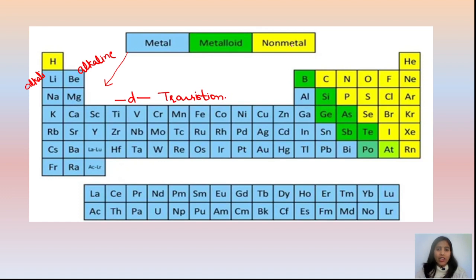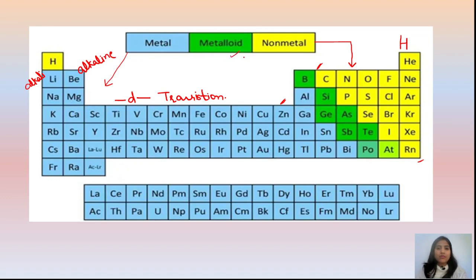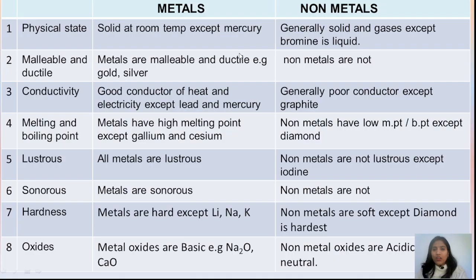If you talk about non-metals, these are shown in yellow. Hydrogen is also a non-metal. The non-metals starting from carbon include: carbon, nitrogen, phosphorus, oxygen, sulfur, selenium, chlorine, bromine, iodine, helium, neon, argon. In the periodic table, there is also a green series of metalloids which show both metal and non-metal properties. Now let's see the difference between metal and non-metal.